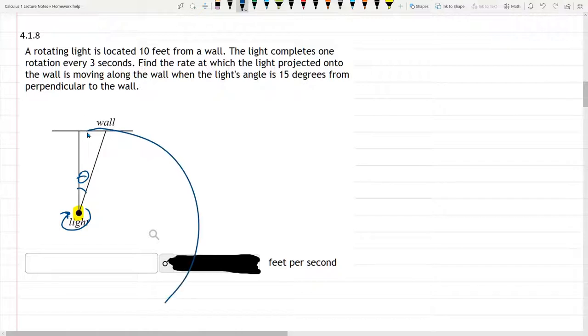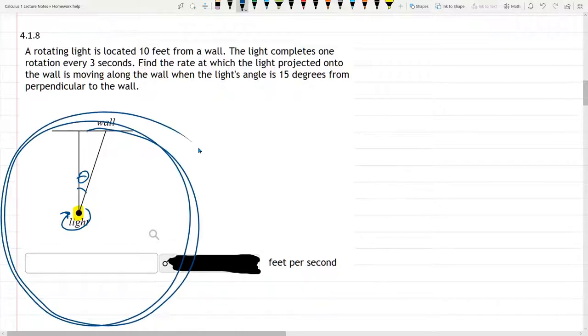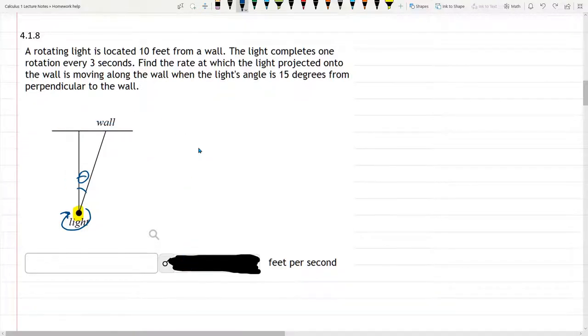And so the light will basically be rotating around like that. Of course, it's on a flat wall, so the light will be rotating that direction, or the other direction. It doesn't matter. One would be positive, the other would be negative, but we're going to choose the positive version for our answer here.